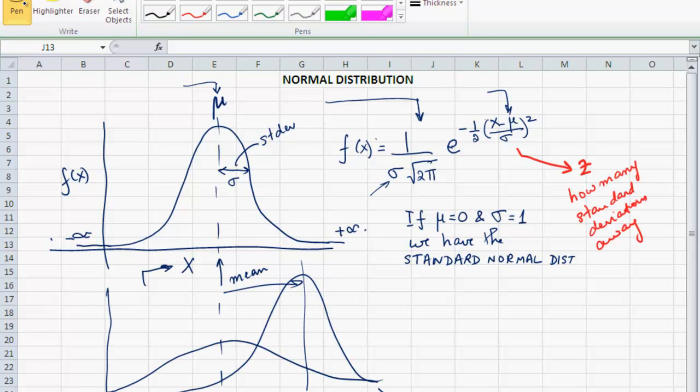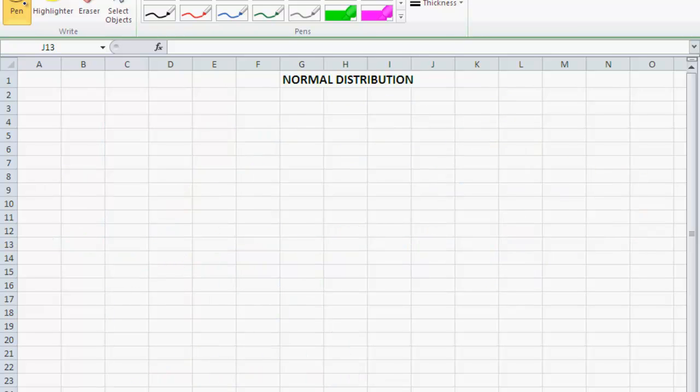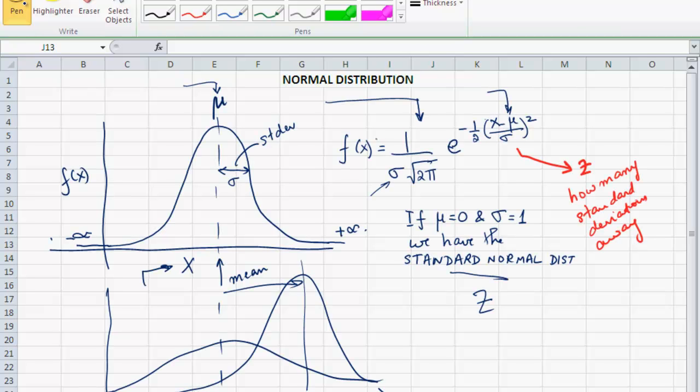There is a very special version of the normal distribution, which is called the standard normal distribution. If we have a special case of the normal distribution where the mean is zero and the standard deviation is one, that particular bell curve is called the standard normal distribution. When we have a standard normal distribution, the random variable is usually represented by the letter Z, not by X or Y.